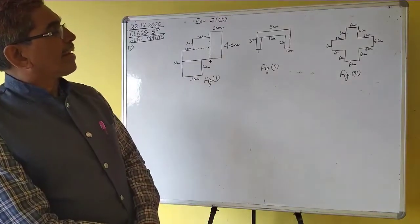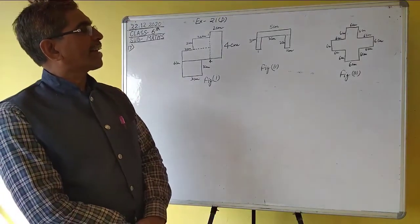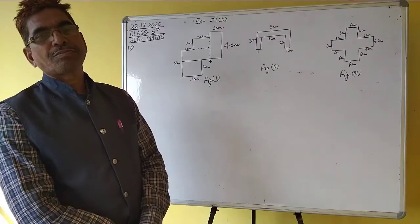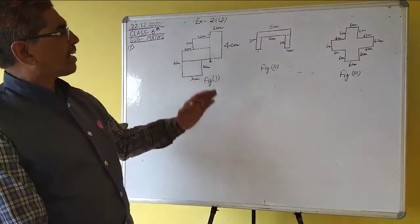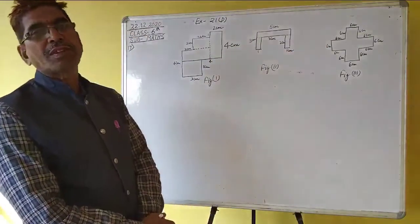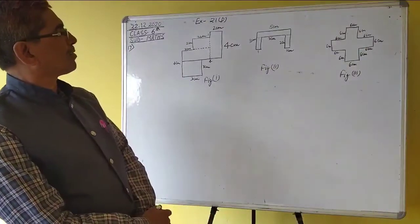Area of rectangle and square. There are three figures given. Find the area of each one.